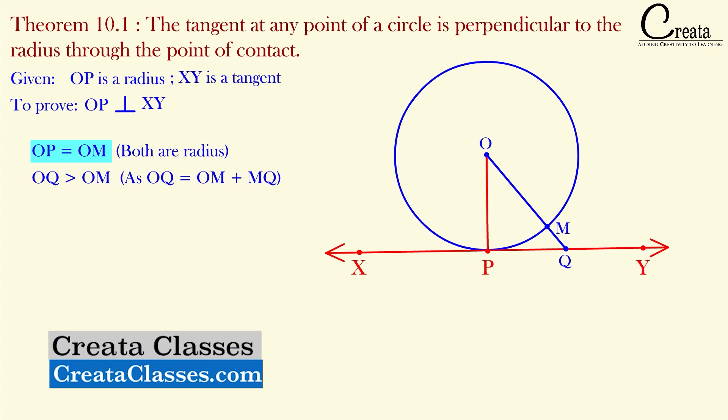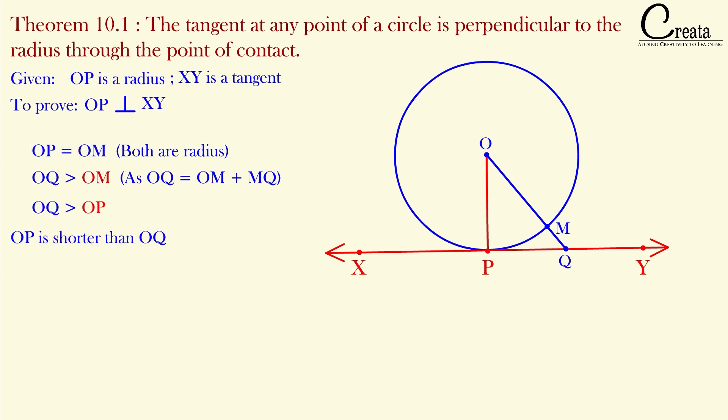Since OM and OP are equal, we can replace them. So we get OP is smaller than OQ.